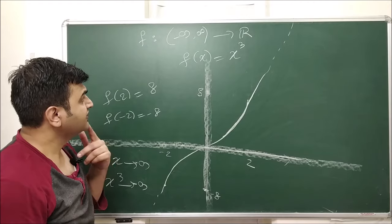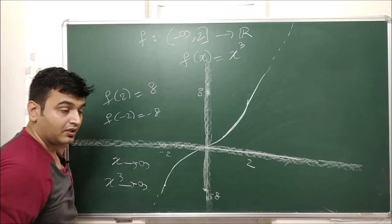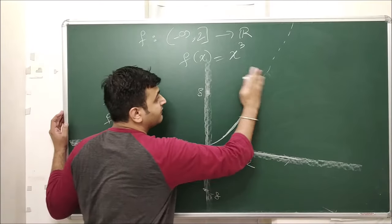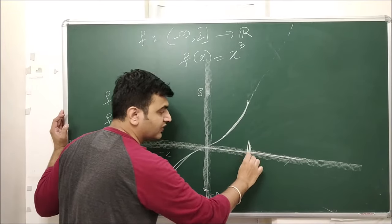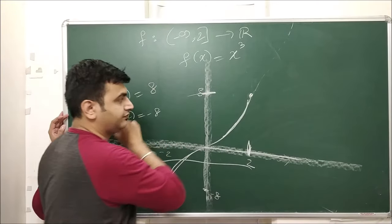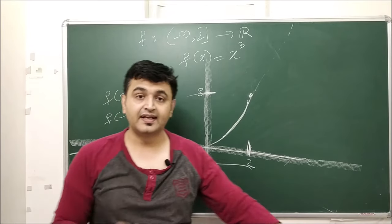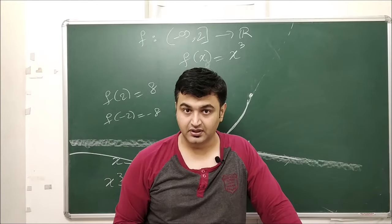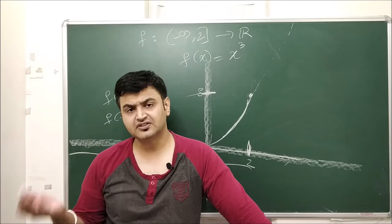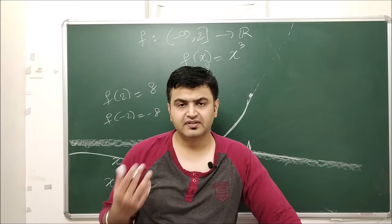If I take the interval (−∞, 2], there is no minimum value because the graph goes to minus infinity, but the maximum value is 8 since I'm going only up to 2. So as you change the interval, the extreme values for the function change. Whenever there is a question on extreme values, you should always check what interval is given.